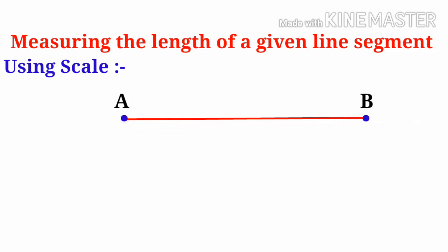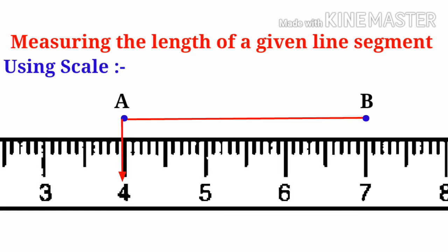If suppose the scale is damaged at 3 centimeters, then how can you find? We can also find from 4. Put A at 4 centimeters and at B it is showing 7. So again, right side 7 minus left side 4, which is 3. So AB length is 3 centimeters.